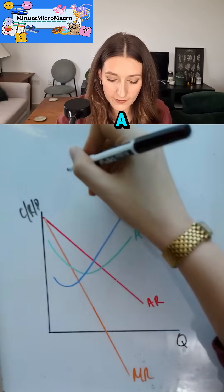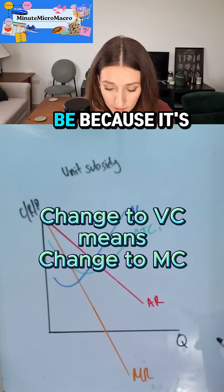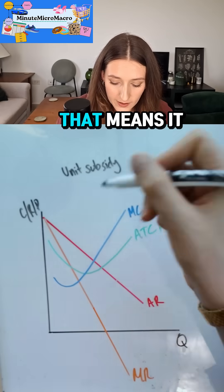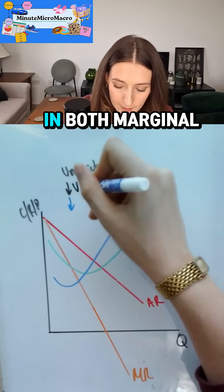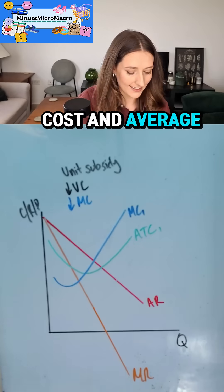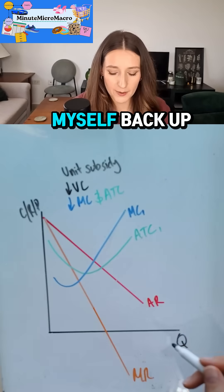However, the government could also give a unit subsidy. If there is a change in variable costs, which there will be because it's a unit subsidy, that means it'll be a fall in variable costs which means there'll be a fall in both marginal costs and average costs.